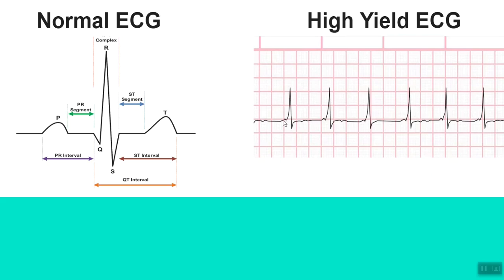As you can see, the Q upstroke on this ECG has a slight slope — in other words, the Q upstroke is slurred. Look at the normal ECG here: it has a steep and straight Q upstroke. Now look at the disease ECG again. You can clearly see there is some slurring of the Q wave. This particular waveform is called a delta wave. Can you guess what this pathology is?